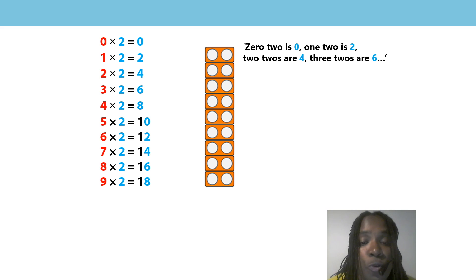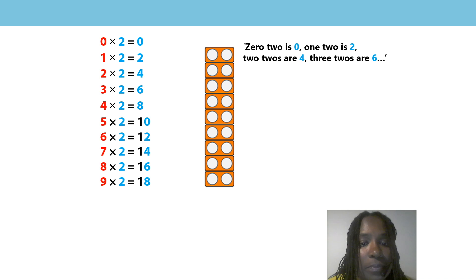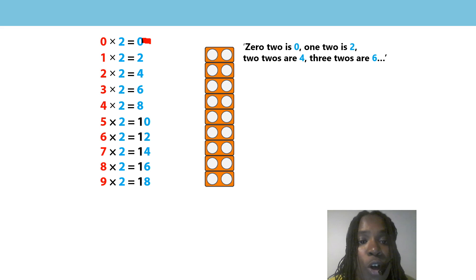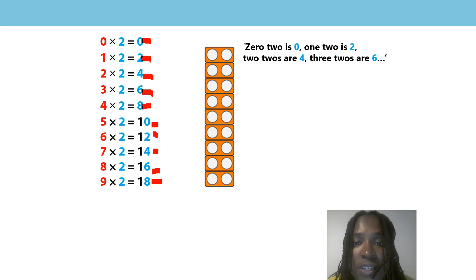Now I would like you to pause the video right here. I want you to take a close look at the ones digit in our products. Can you spot a pattern? Explain this pattern to your mum, dad, brother, sister, or even your teddy. How did you get on? Did you notice that there is a pattern of 0, 2, 4, 6, 8 — repeating 0, 2, 4, 6, 8 — in our ones digit? Great job.